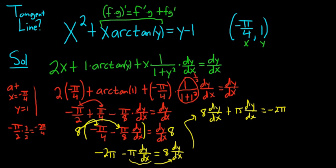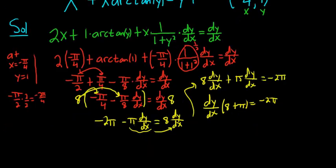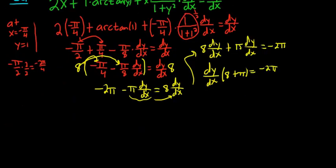Then we can factor out the dy dx. So dy dx times 8 plus pi equals negative 2 pi. And to finish, we divide by 8 plus pi. So we have dy dx equals negative 2 pi over 8 plus pi.